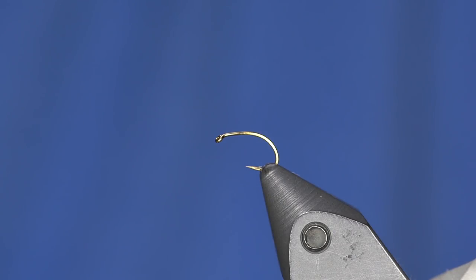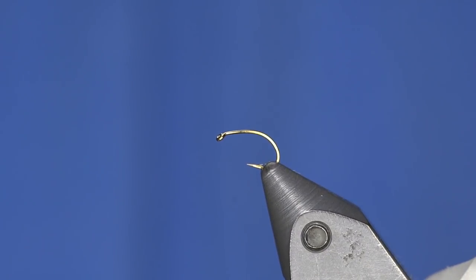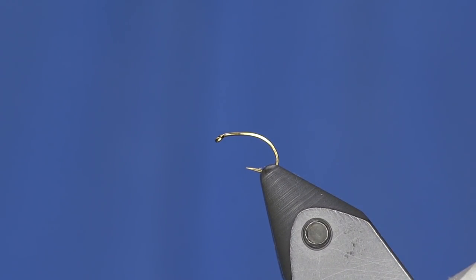This is a fluttering caddis pattern that's representative of when the flies are on the water kind of skittering around. They have their wings extended and are already adults. So they're enjoying adult beverages, they're listening to Michael Bolton, they've got fanny packs on, they're disciplining their kids. That's the caddis we're tying.